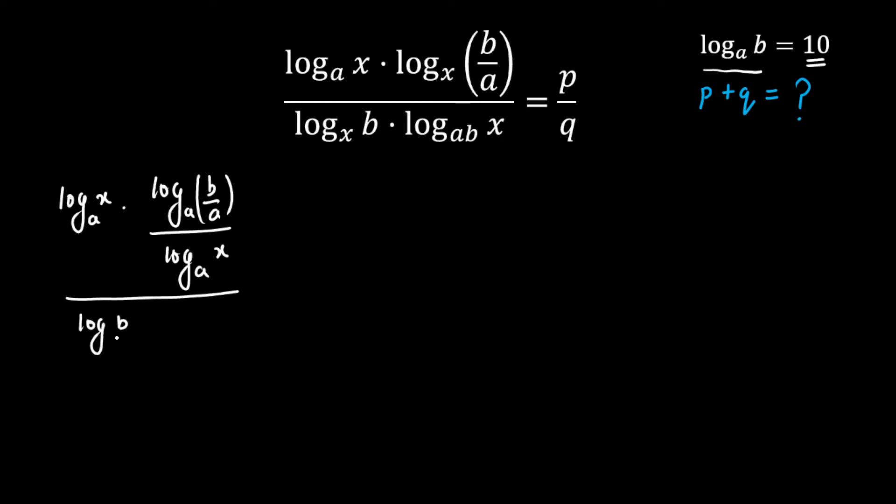Here we'll get this as log b to the base a upon log x to the base a, multiplied by log x to the base a whole divided by log ab to the base a. Now this is given as p by q.